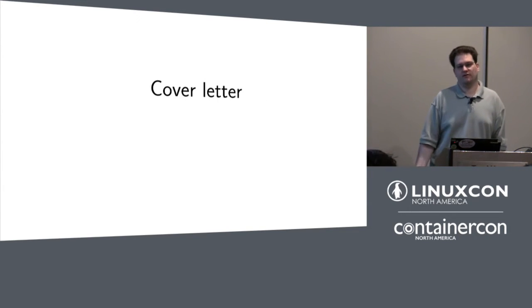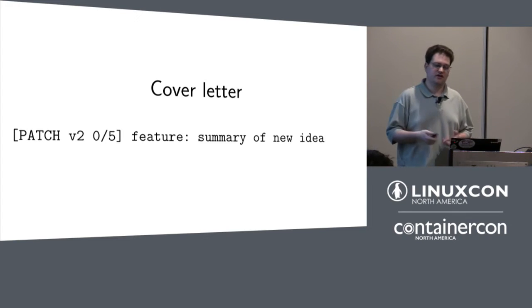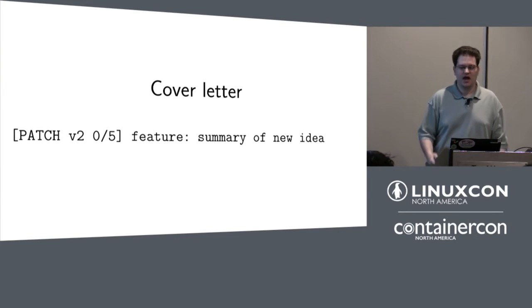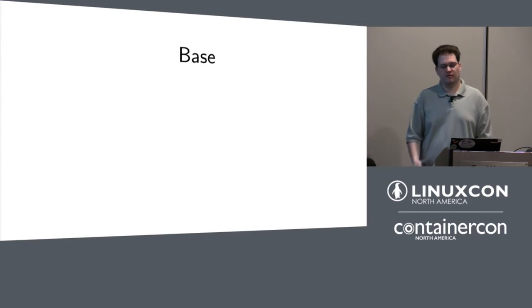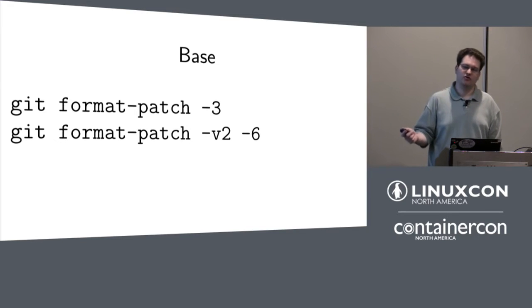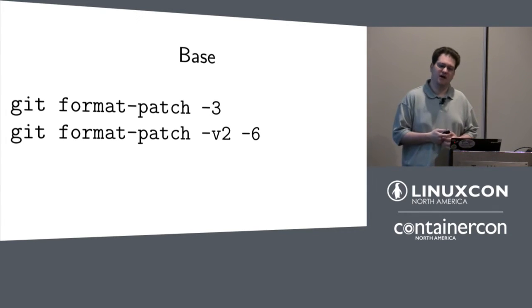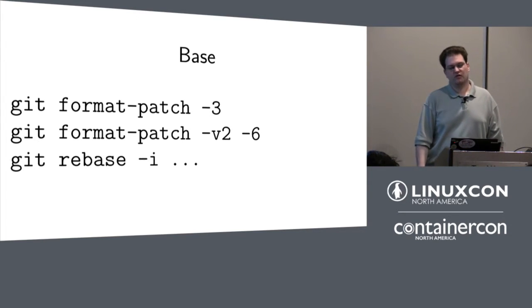There are a few other things we might want as long as we're trying to build something to solve this problem. When you send out a patch, you might want a cover letter — a patch 0 of N that says here's a summary of the idea I'm trying to implement, an overview of what I'm trying to do. This is really common for a multiple-patch series, and it's not something you can currently track in Git at all. The other issue is knowing what you based your patches on top of. With format-patch, I had to actually know how many patches I had in my series, and I don't keep that count in my head as I merge or split patches. Same thing for rebase -i — every time you run it, you need to find the commit right before where you want to start adjusting.